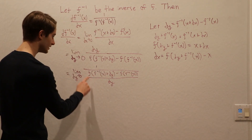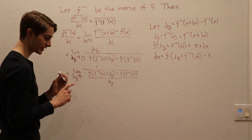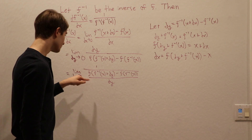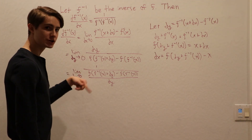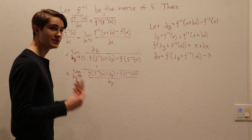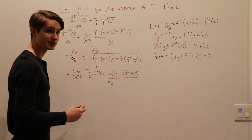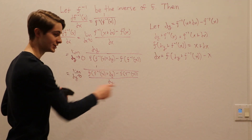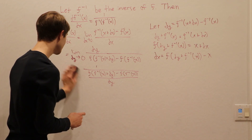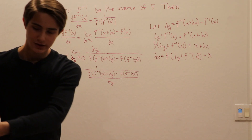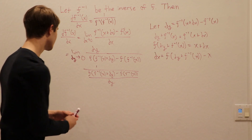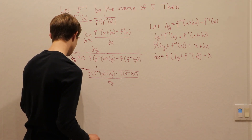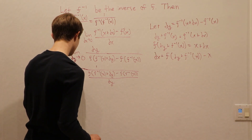On the bottom, this now looks like a derivative. Since 1 over x is a continuous function everywhere except 0, and the limit of a continuous function equals the continuous function of the limit, we can write this whole thing as 1 over, and then place the limit on the bottom as dy approaches 0.